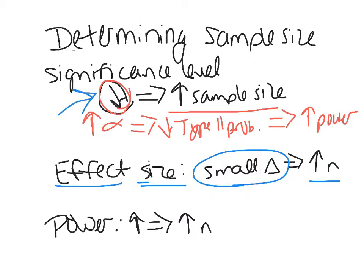A small effect size means I would decrease my alpha because I don't want a potential type 1 error, and so I again need a bigger sample size. Power also comes into play: what chance do we want our study to have to detect a difference of the size we think is important? Basically, how good do you want your test to be? If I want to increase power, I need to increase my sample size.